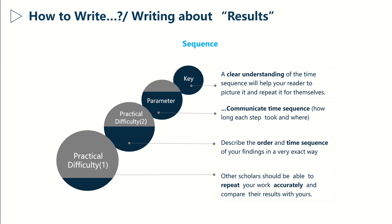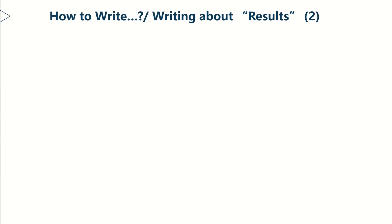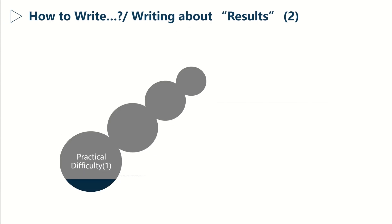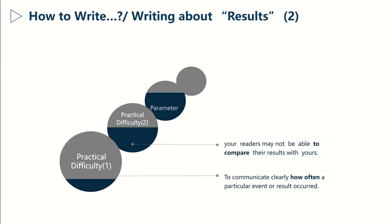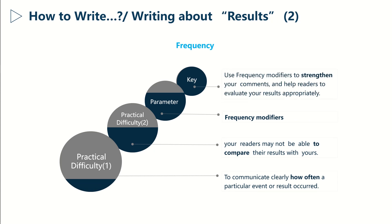Let's move on to the second point, which is expressing frequency. Here also there are two main difficulties. The first one is to communicate how often a particular event or result occurred. The second one is all about enabling your readers to compare their results with yours. This is achieved via using frequency modifiers. We'll see how to use them in the next slide.